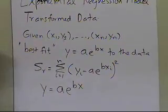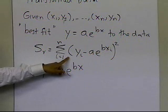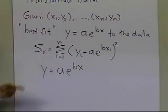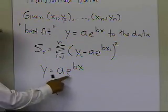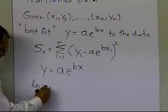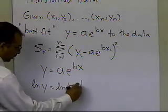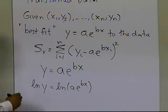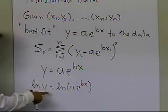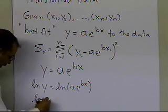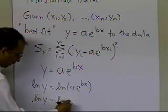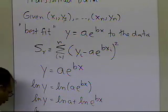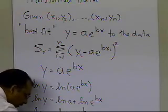Starting with y = a^(bx), if I try to find the values of a and b by taking partial derivatives of the sum of residuals with respect to a and b, I get a nonlinear equation. Instead, I take the log of both sides: log(y) = log(a^(bx)), and using the log multiplication rule, that gives log(y) = log(a) + bx.